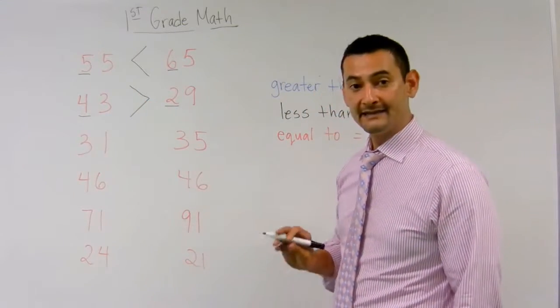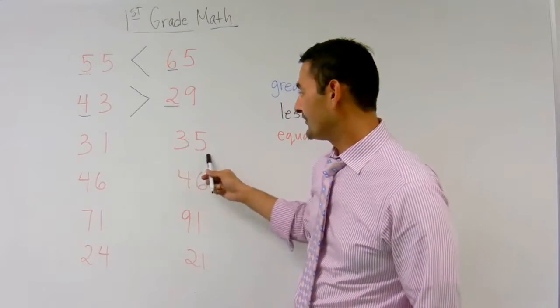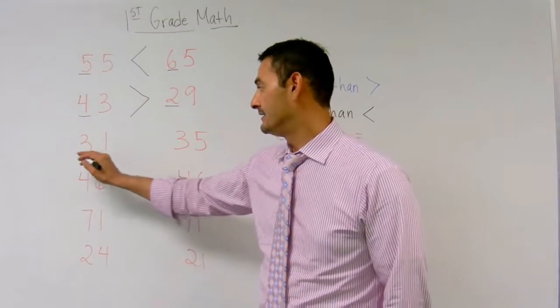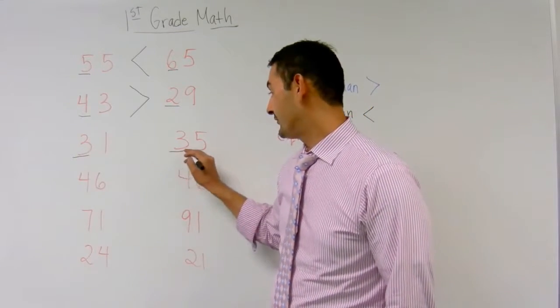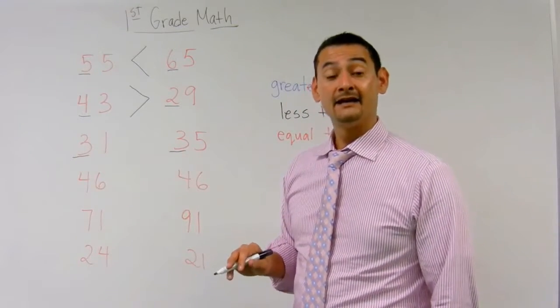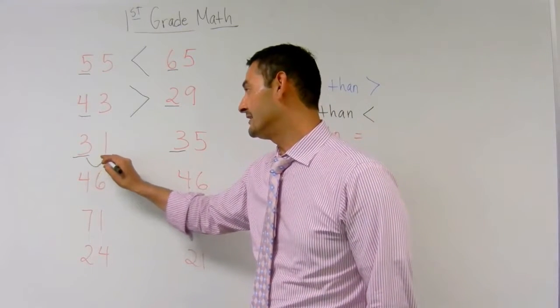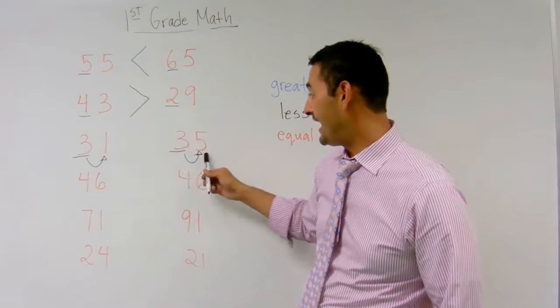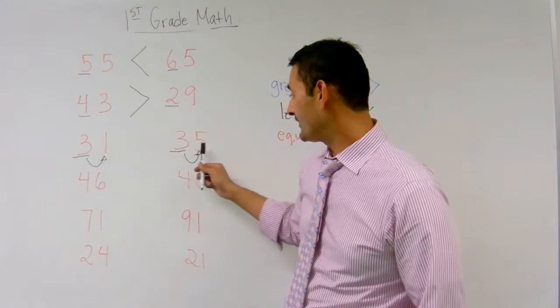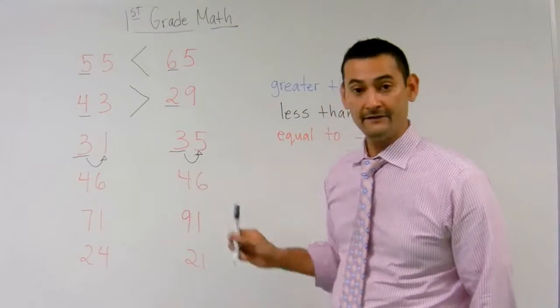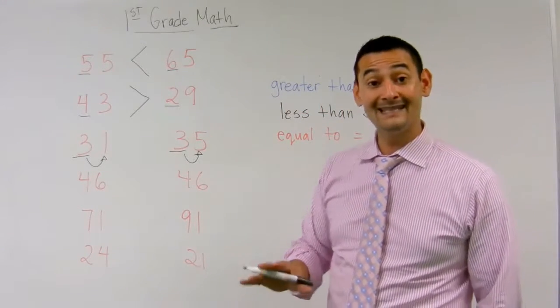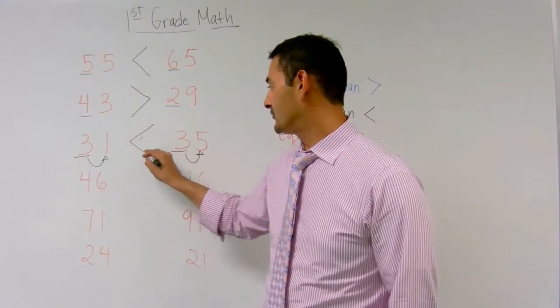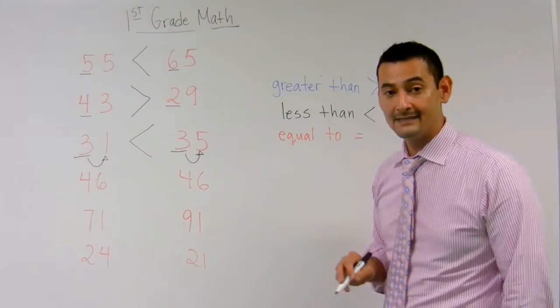Now, let's take a look at the next problem. Here we have 31 and 35. What are the first numbers that I'm going to take a look at? The tenths place, right? Look at the 3. Look at the 3. Are they the same? They are. So, we have to now move on to the ones place. Now we have a 1 and we have a 5. Is the 1 smaller than the 5 or is it bigger than the 5? It's smaller, right? So, that means that it's less than. So, I'm going to use this symbol here and I'm going to draw it right there. 31 is less than 35.